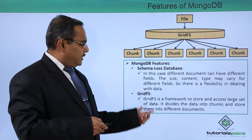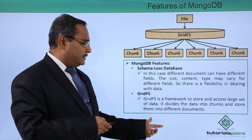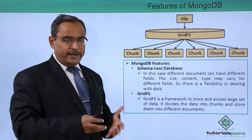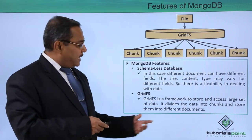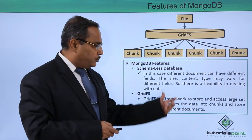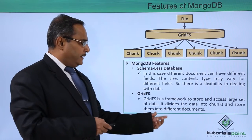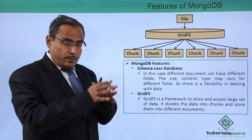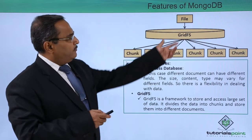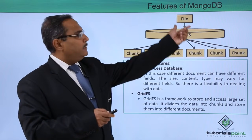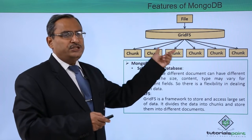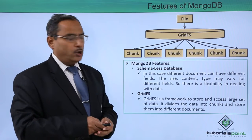Next is GridFS. GridFS is a framework to store and access large sets of data such as images and videos. It divides the data into chunks and stores them in different documents. A huge file is divided by GridFS into multiple different portions, also known as chunks of data, and they get saved across different documents.